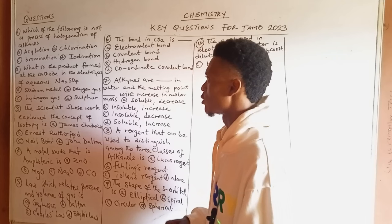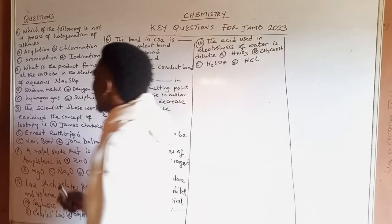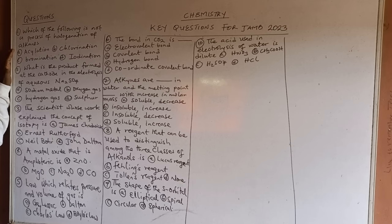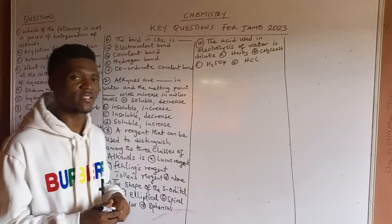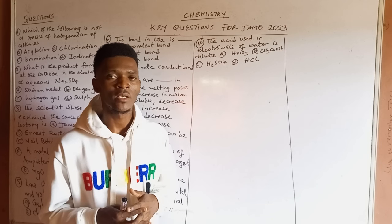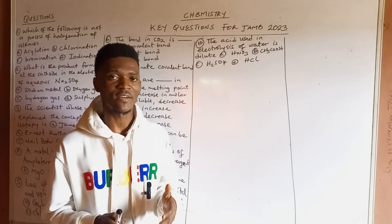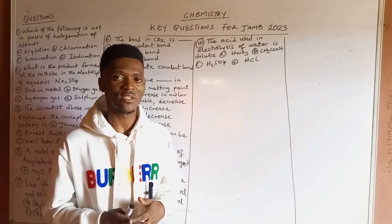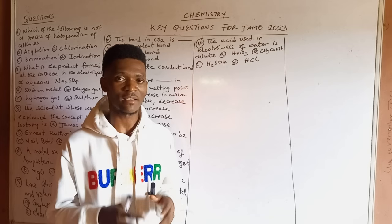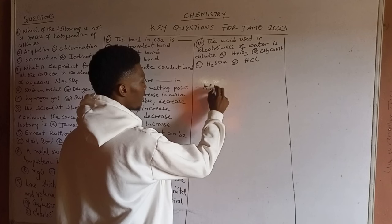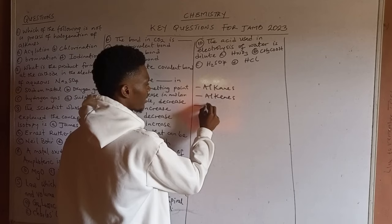Looking at the first question: which of the following is not a process of halogenation of alkanes? This is coming from organic chemistry. We know that hydrocarbons are organic compounds and are considered the roots of organic chemistry. We have two divisions of hydrocarbons: aliphatic and aromatic. The aliphatic are open-chain hydrocarbons while the aromatic are close-chain. Under the aliphatic we have alkanes, alkenes, and alkynes.